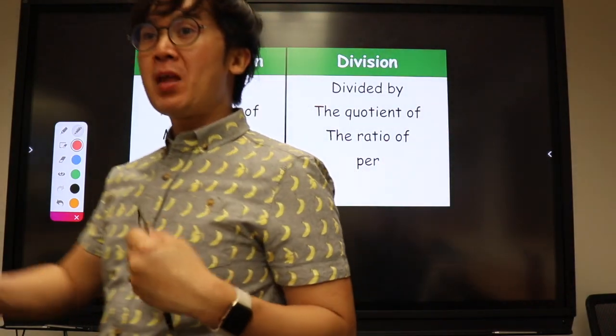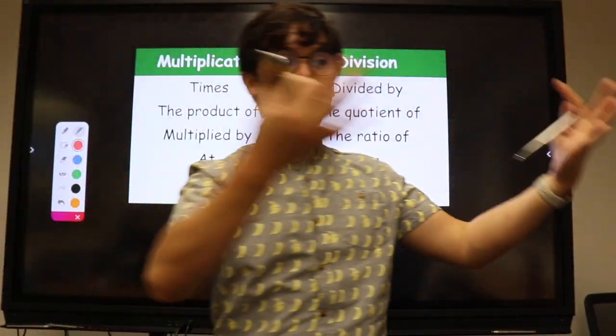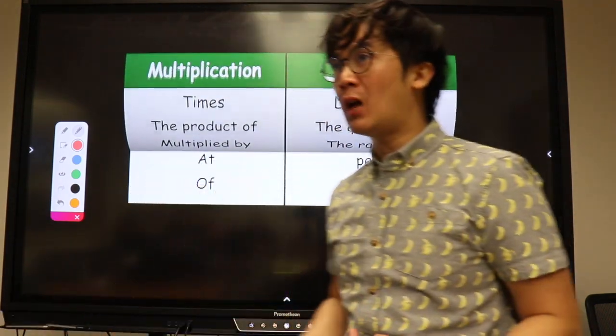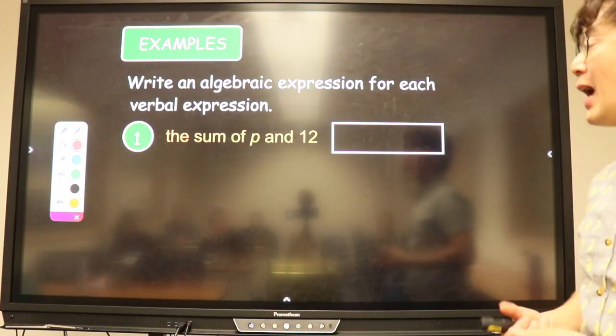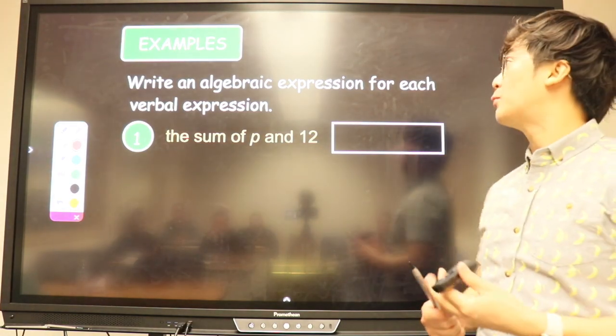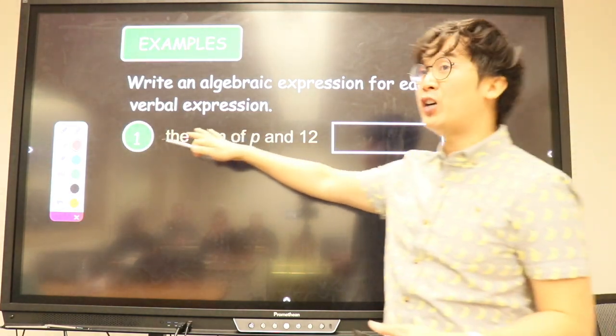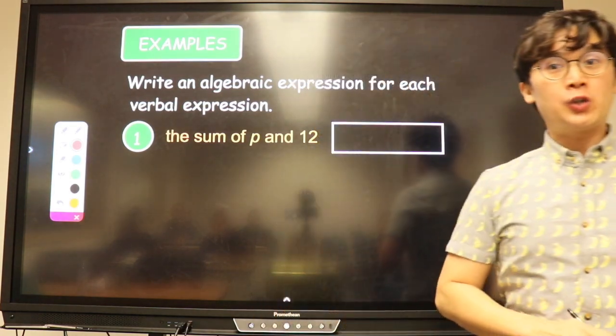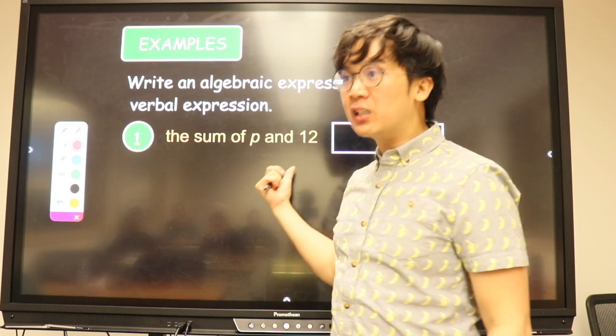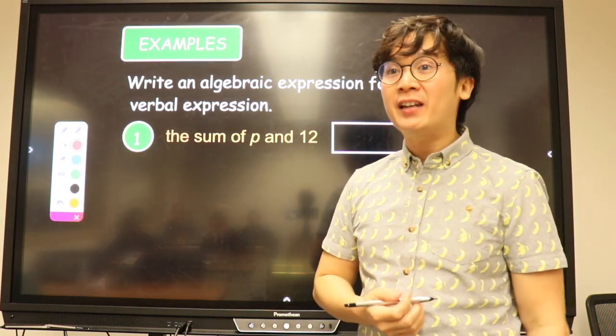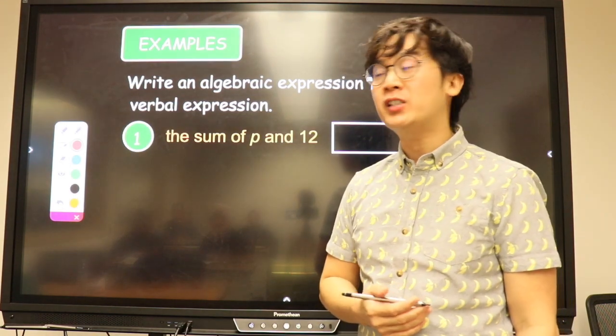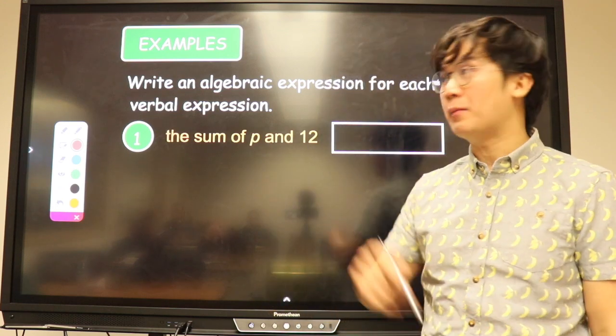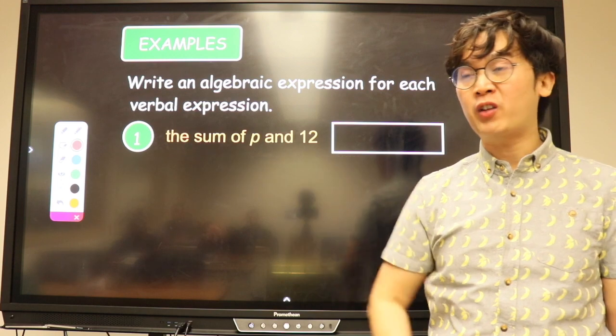What we're going to be doing first is translating a verbal phrase to a mathematical equation and vice versa, because that's how we can solve problems in algebra. Let's say we need to write an algebraic expression for this verbal expression: 'the sum of p and 12.' This is obviously an English phrase, so how are we going to translate it into a mathematical expression? What operation are we using - plus, minus, multiply, or divide?